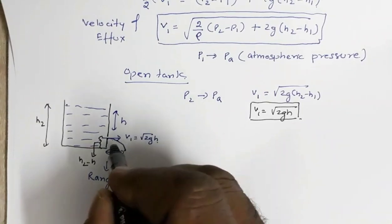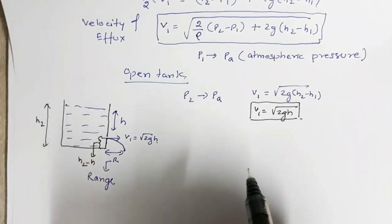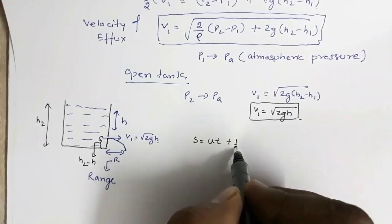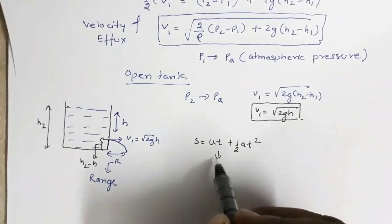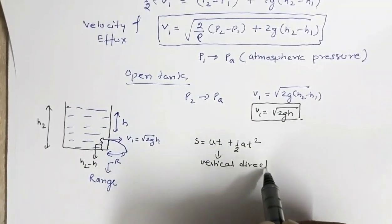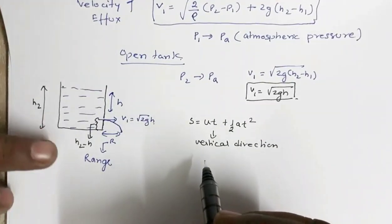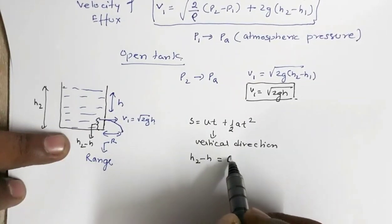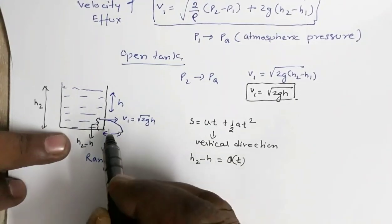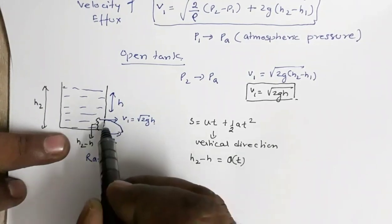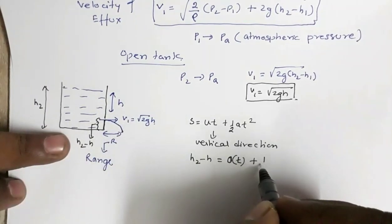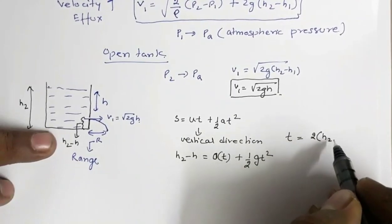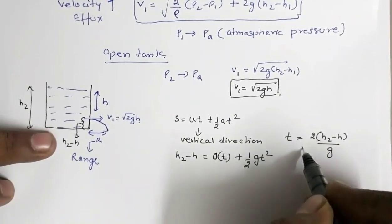Since v1 is horizontal, the initial velocity along the vertical direction is zero. Using S equals ut plus half at squared in the vertical direction, the displacement is h2 minus h. So h2 minus h equals half g t squared, which gives t equals the square root of 2(h2 minus h)/g. This is the time taken to reach the bottom.